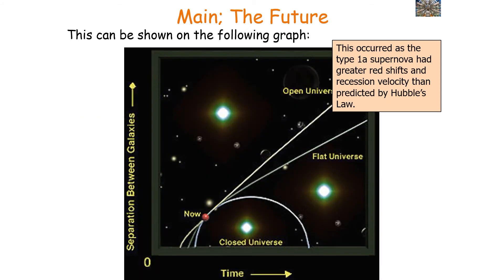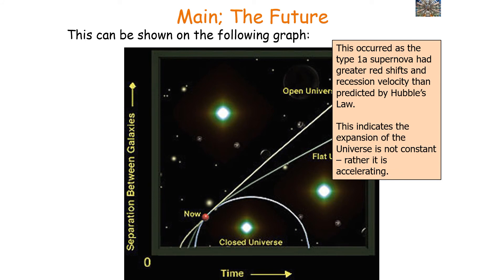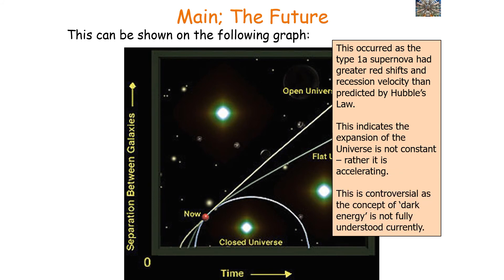So let's just clarify a few things. We understood that the universe is most likely to be an open universe, as the Type 1a supernovae had greater redshifts and recession velocity than predicted by Hubble's law. This indicates that the expansion of the universe is not constant; rather, it is accelerating.